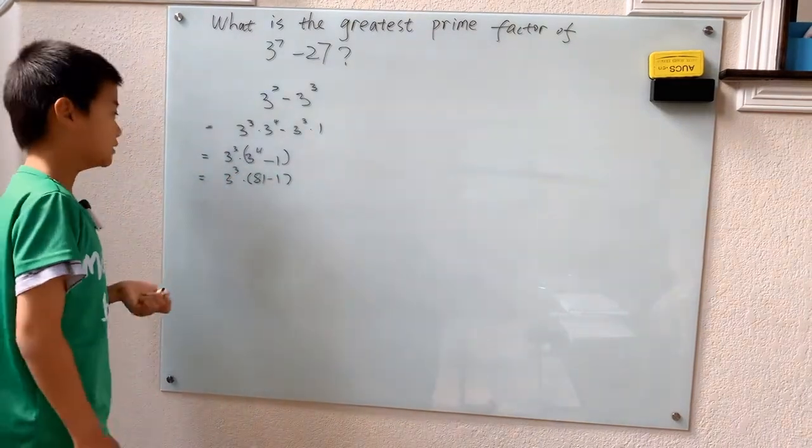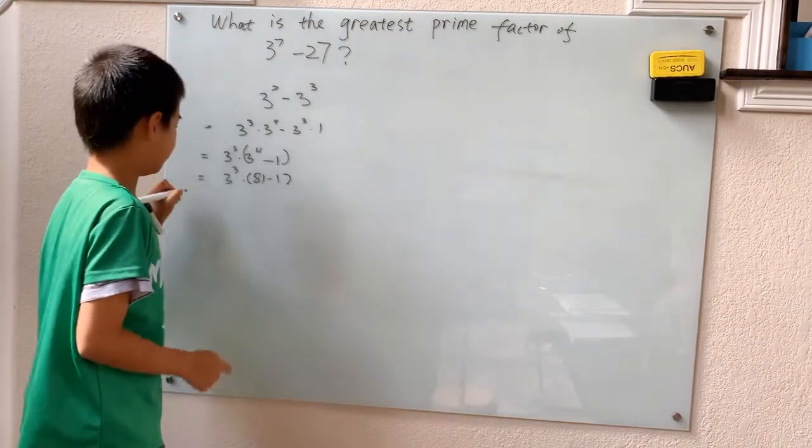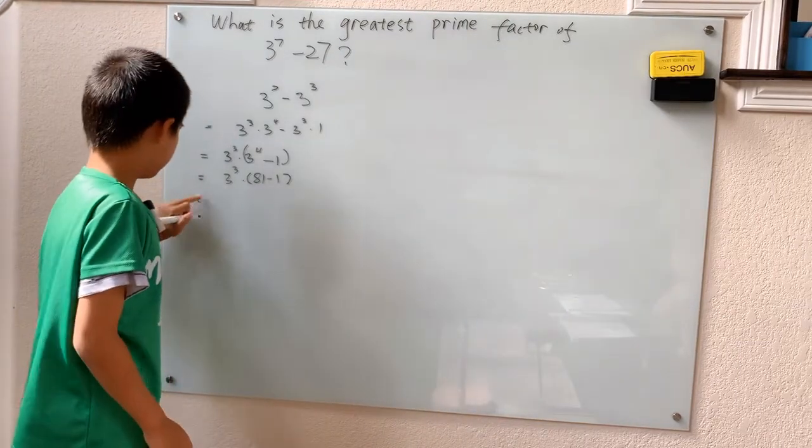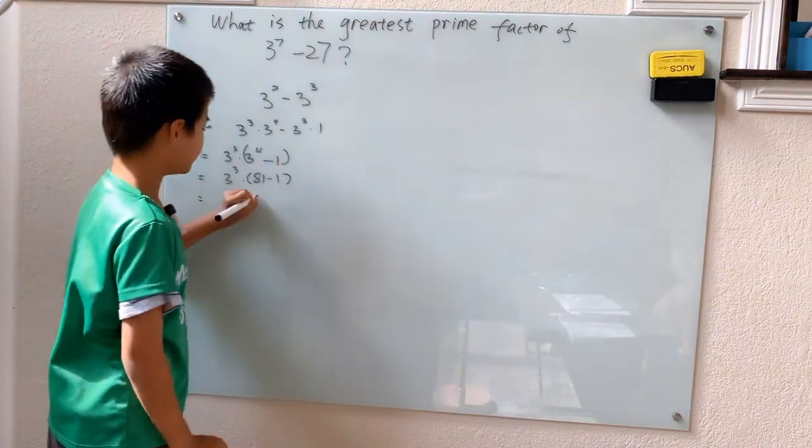9 squared, which is 81. Not 81. Never mind. Then we have that 3 cubed, which is 27, and 80 minus 1 is 80.